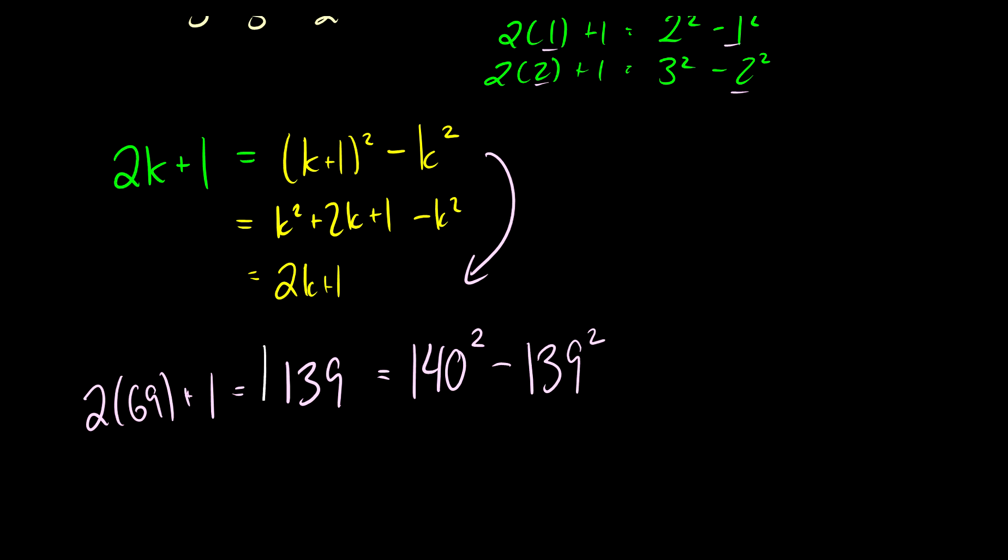So you can check on your calculator, and you're going to see that this isn't true because this is actually 69 squared, or sorry, this is actually 70 squared minus 69 squared. This is what happens when I don't check my value of k. So 139 equals 70 squared minus 69 squared, and you can kind of do this in your head if you want.